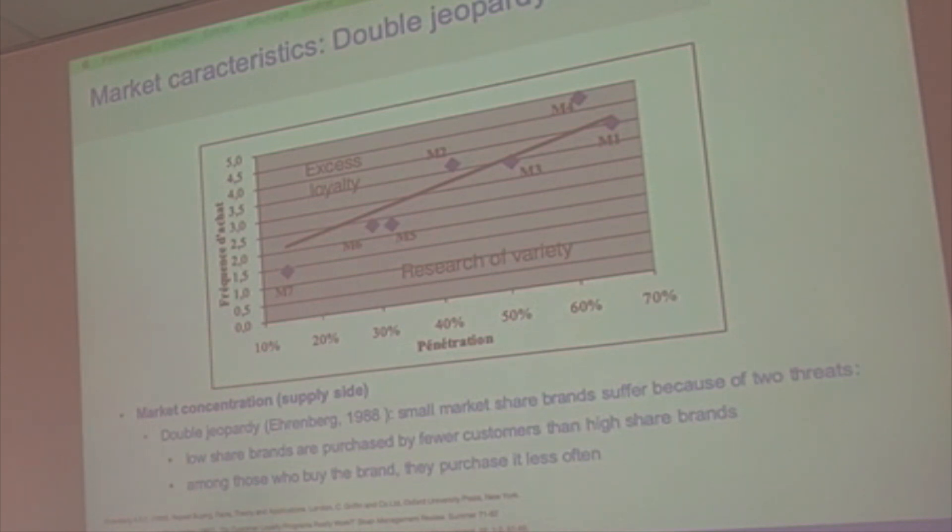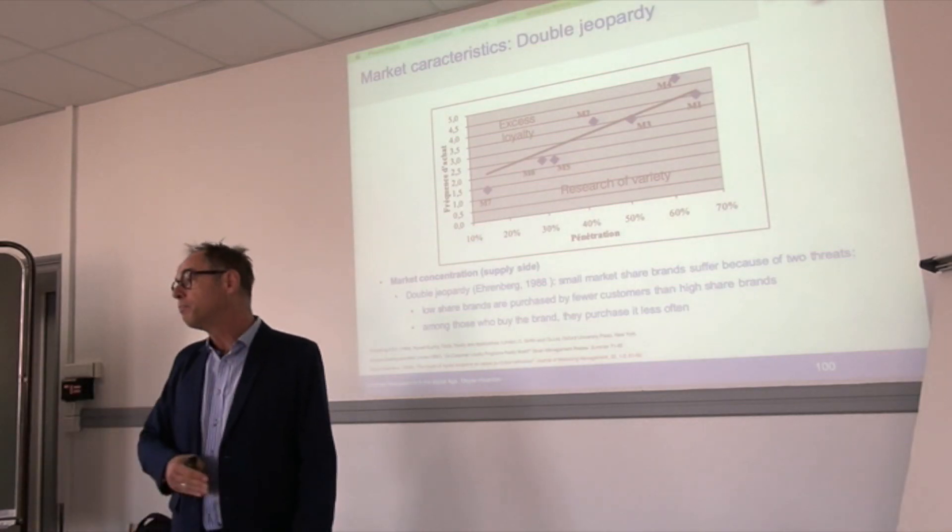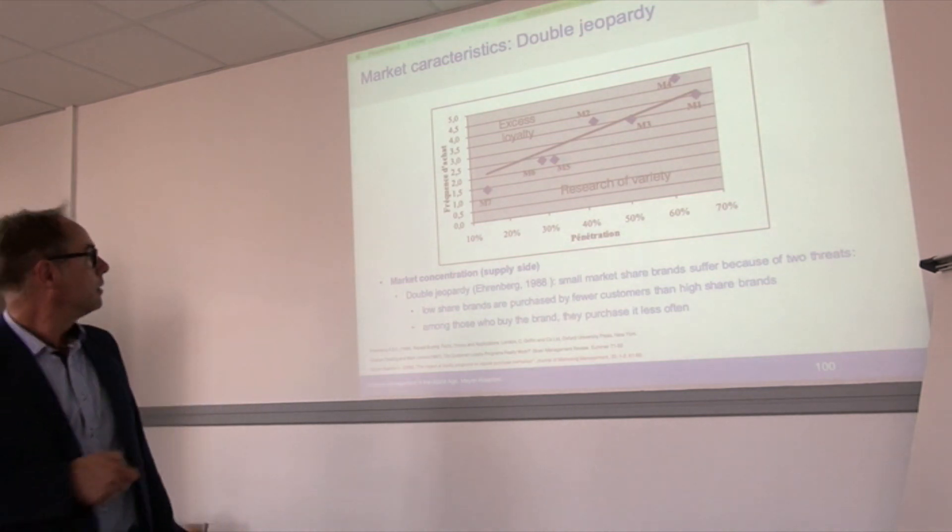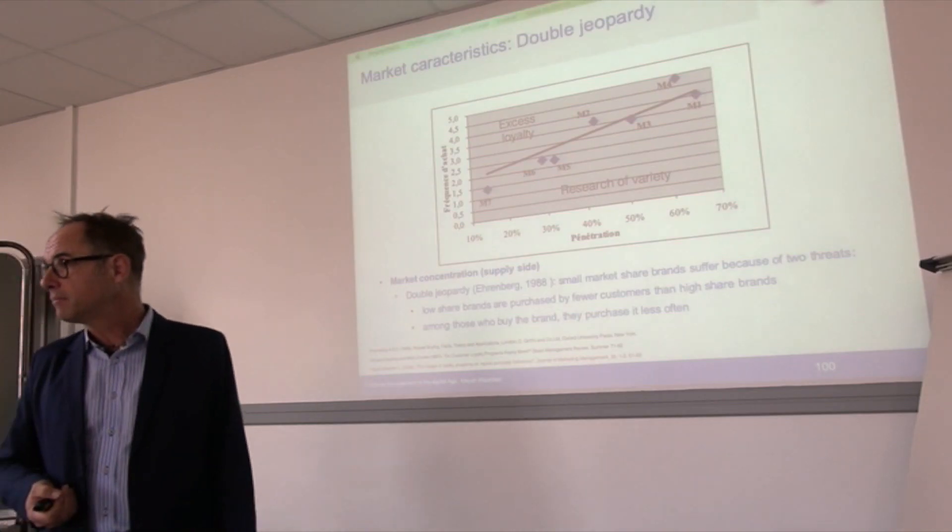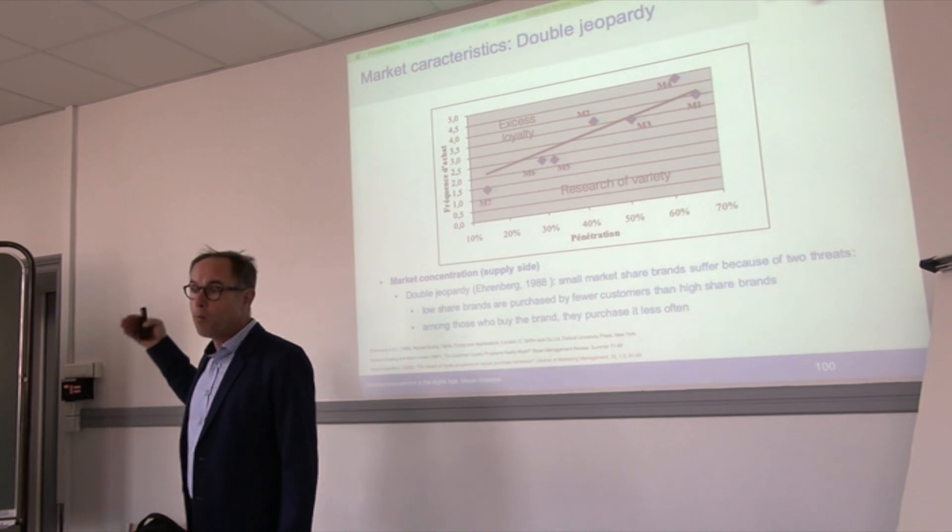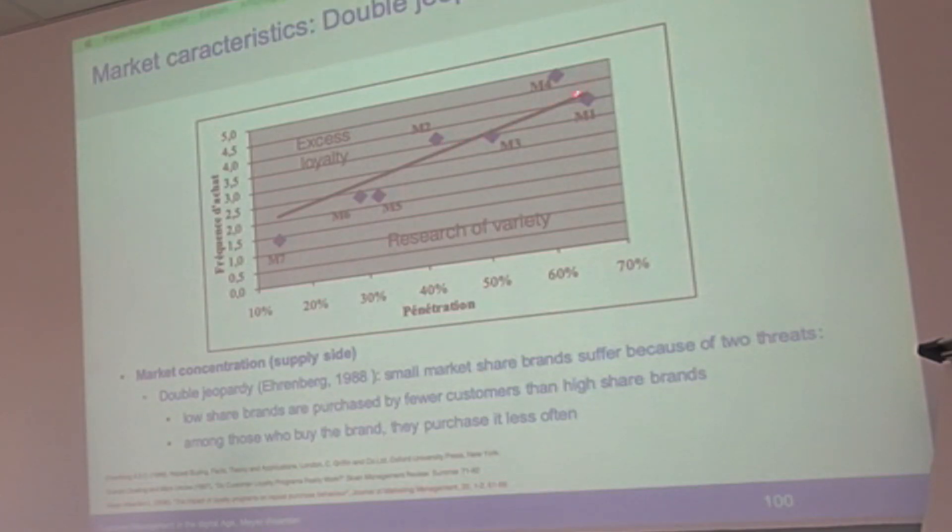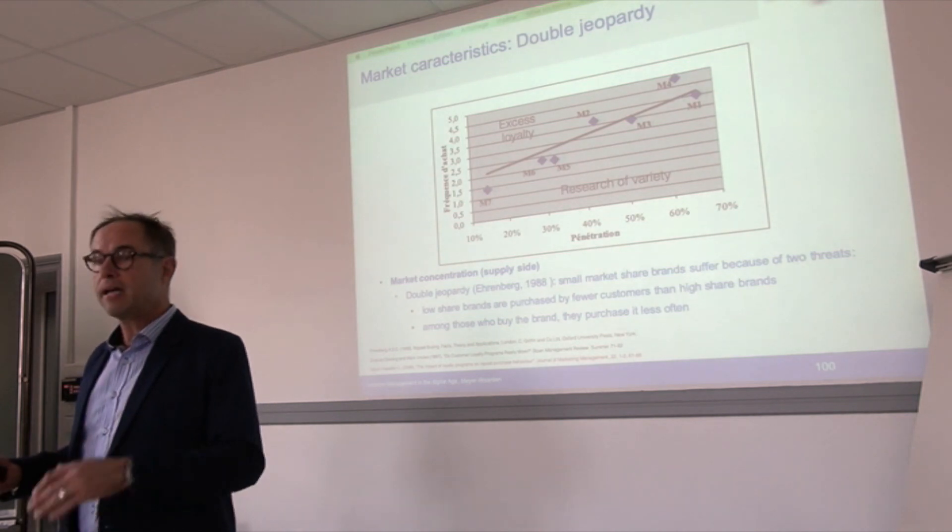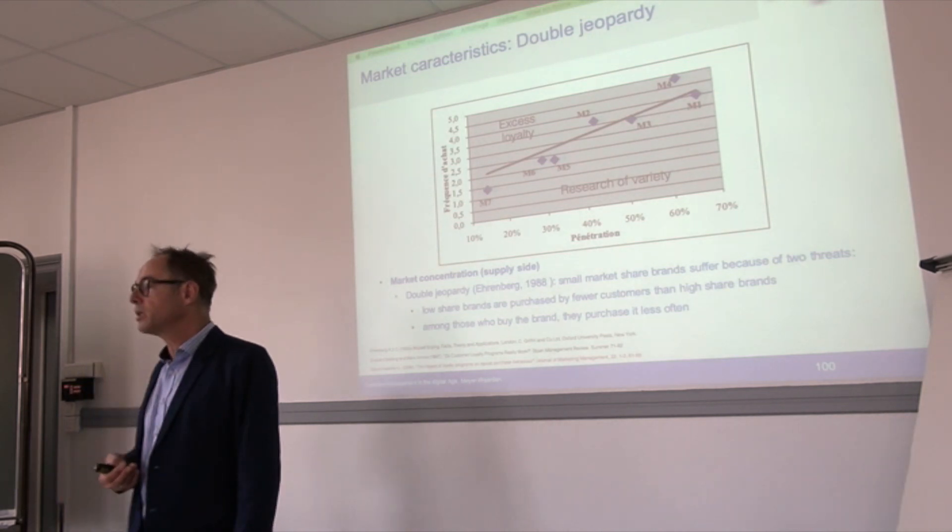If you look at small brands, they are hit three times because they have less buyers, less loyalty, and their loyalty programs work less efficiently. Because they are below this line, the loyalty is even lower than it should be theoretically according to penetration. This shows clearly these three brands have double jeopardy, and the consequence is that their marketing tools, including loyalty programs and sales promotions, work less well than the marketing actions for leading brands which are above the line. It's even a triple jeopardy.